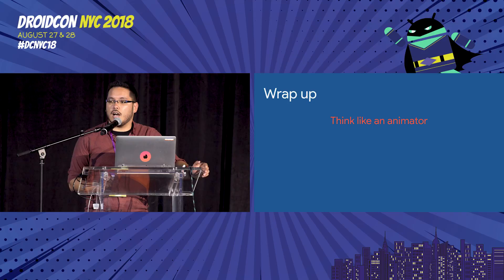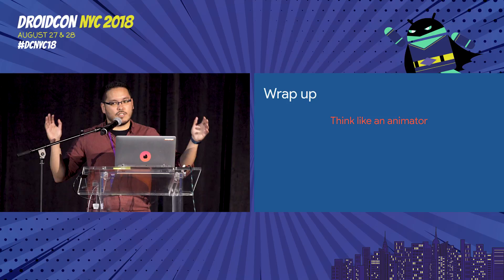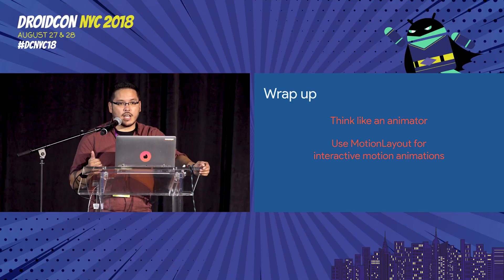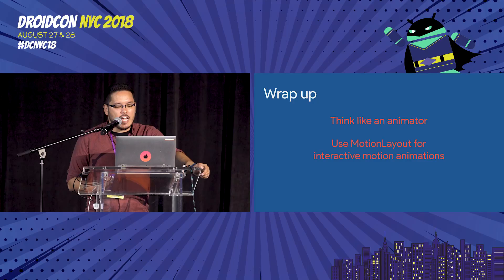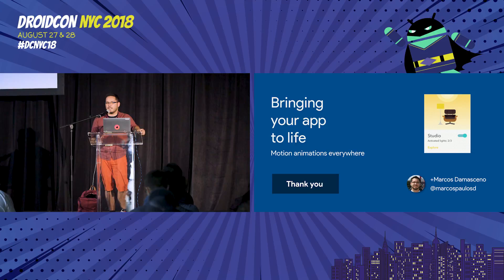To wrap up: think like an animator. Plan your animation beforehand. Think about your layout hierarchy — set your app up for success. Just like training a dog, you set them up for success. Keep things flat and make sure your animation is set up correctly. Use MotionLayout for interactive animations — every time you want to scroll and animate something, or do choreography, that's when MotionLayout is your best friend. And animations are not always just polish — they are an important part of your app. Pay attention to them. Thank you very much.